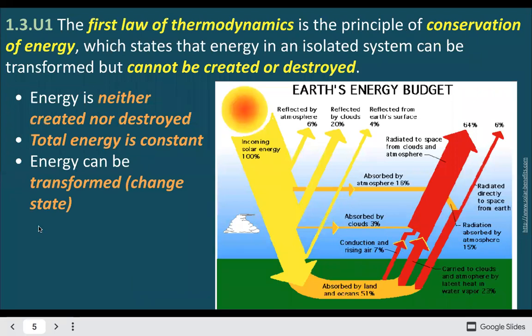The first law of thermodynamics is more commonly known as the law of conservation of energy. Basically, in an isolated system, we can transform energy and transfer energy, but we can't actually create or destroy it. Energy has to come from somewhere and go somewhere — it can't be created out of nothing. You can't get something for nothing.